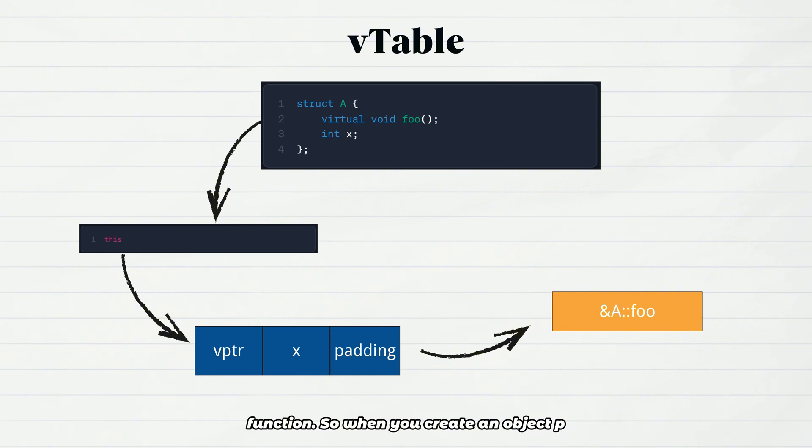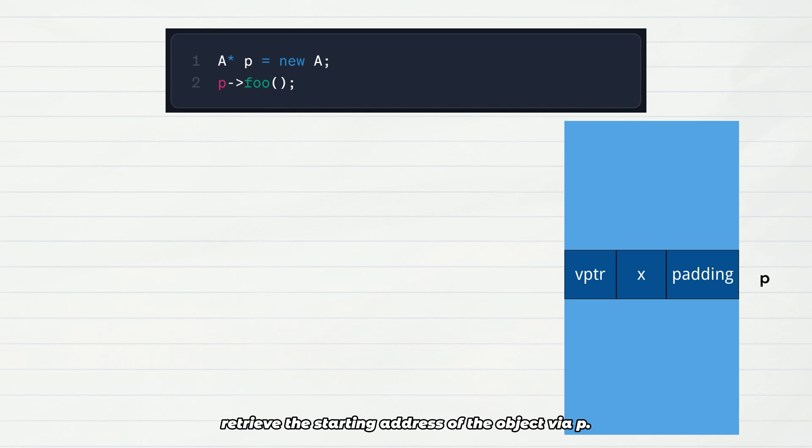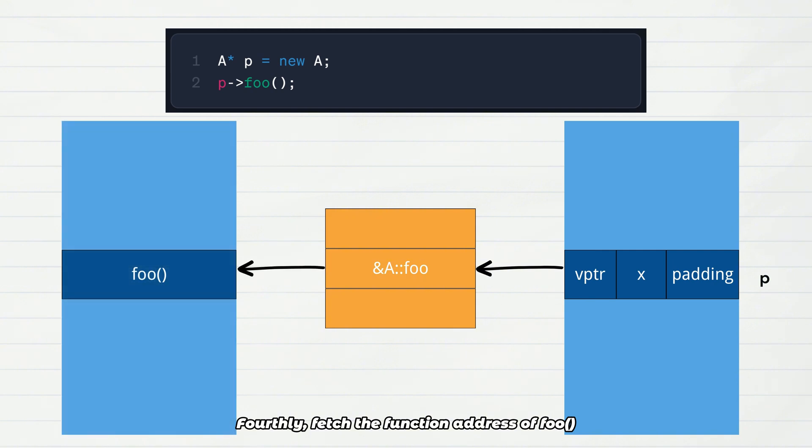So when you create an object p of class A and call foo function, here's what the CPU actually executes: First, retrieve the starting address of the object via p. Second, read the first eight bytes at that address to get the virtual table pointer. Third, use the virtual table pointer to find the start of the table. Fourth, fetch the function address of foo from the first entry in the table. Finally, perform an indirect jump to execute the function.